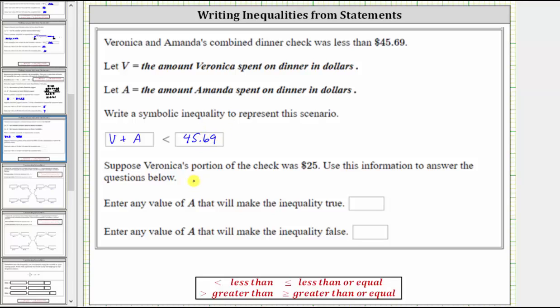Next, suppose Veronica's portion of the check was $25. Use this information to answer the questions below. Before we do this, notice how they're telling us that V is equal to 25, because Veronica's portion of the check was $25.